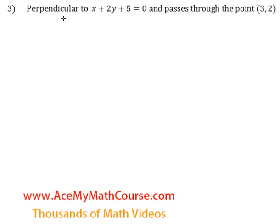Find the equation of the line that is perpendicular to x plus 2y plus 5 equals 0 and passes through the point 3 and 2. That is question number 3.